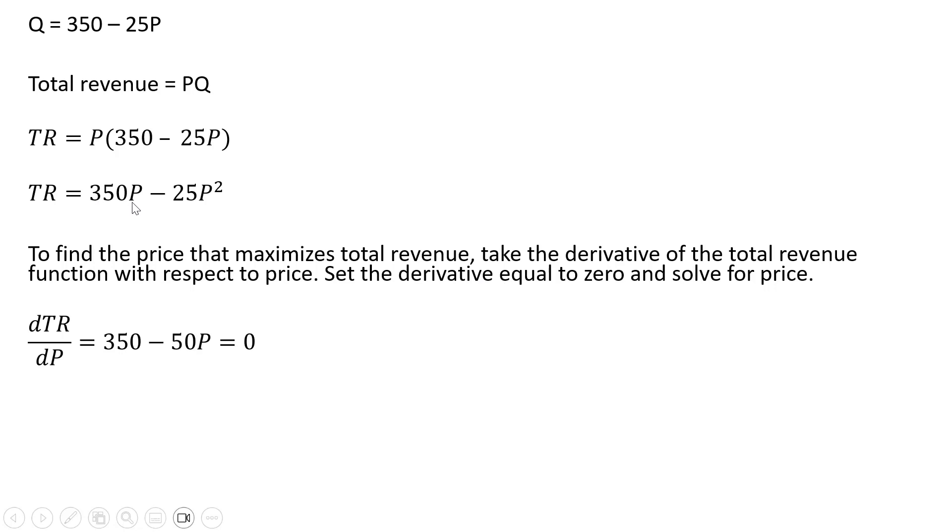So the derivative of 350P is just 350. The derivative of minus 25P squared is just minus 50P. Setting that derivative result equal to 0 and solving for P, the price that maximizes total revenue is $7.